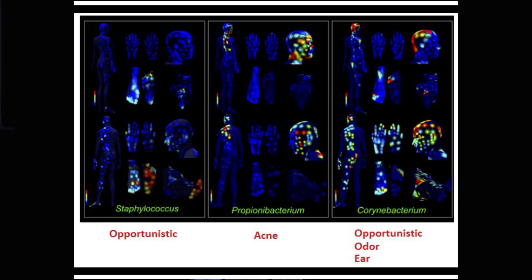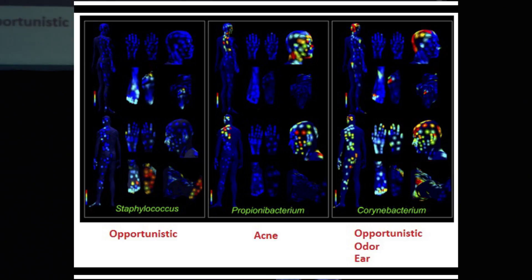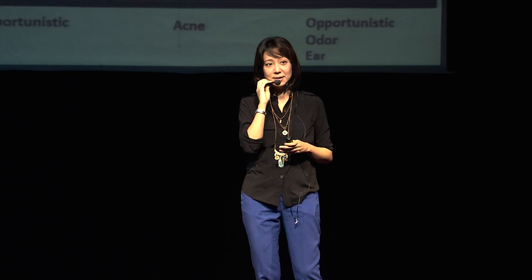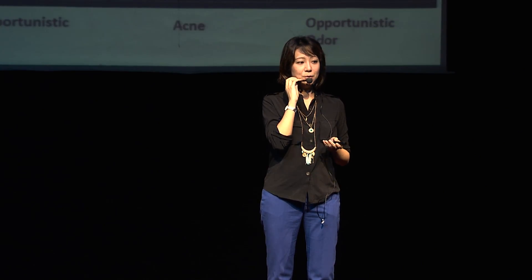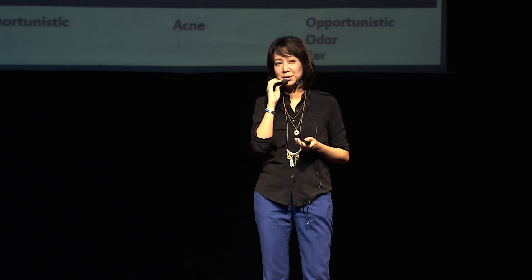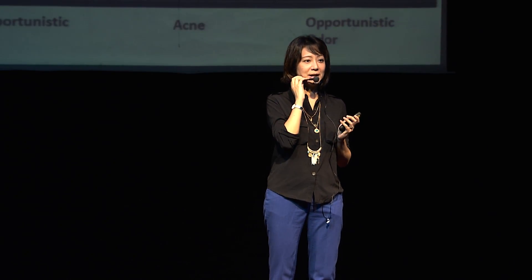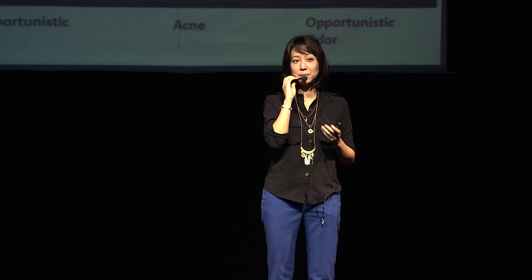Skin is a very huge organ that we own, going up to 2 meters squared — that's like 20 square feet. Some of our slaves are opportunistic, which means they cannot attack us if there is no opening on the skin, or if our other slaves are actually inhibiting them — thus they cannot overpopulate. Acne problems and body odor problems are actually attributed to all these different bad bacteria that are overpopulating in our skin.